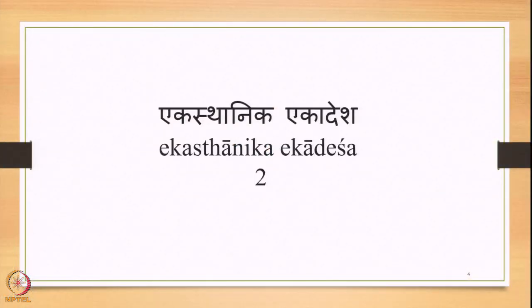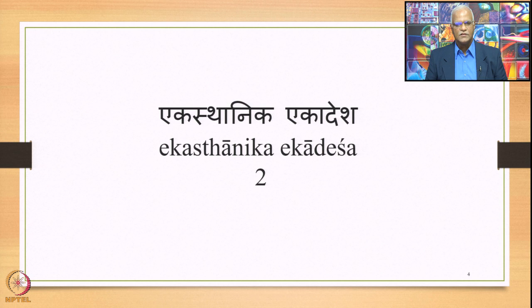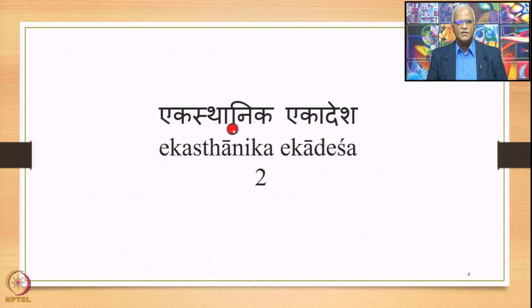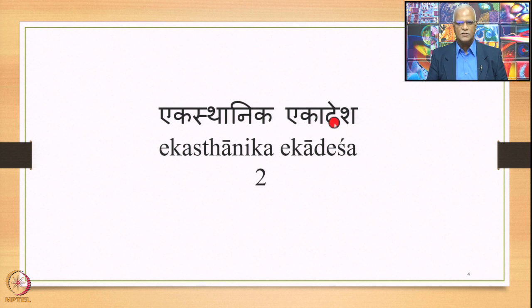We have stated that the Ach Sandhi can be classified under two broad heads. The first one is Ekasthanika Ekadesha, described as one Sthani and one Adesha — one substituent and one substitute, one substitute coming in place of one substituent. The second is Dvishthanika Ekadesha — one substitute in place of two substituents, two substituents getting substituted by one substitute.